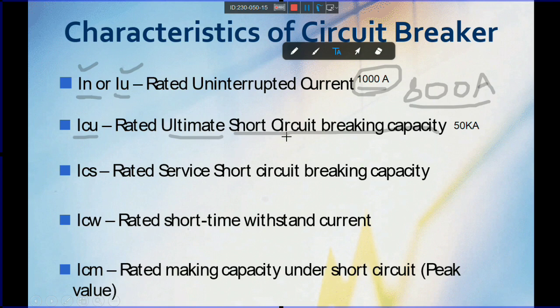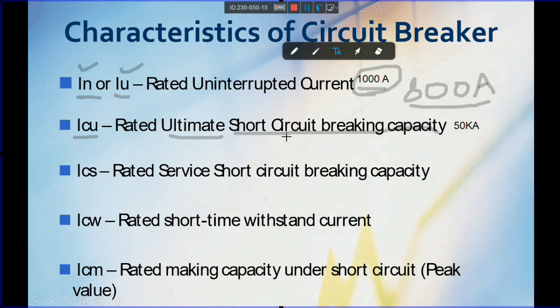For a 1000 amp breaker set at 3 to 5 times, the breaker will trip at 3000 to 4000 amps. So we are discussing two parameters: the actual trip value — when we are tripping the breaker — and the ICU, which is the maximum capacity of the breaker with which it can trip without getting any damage.